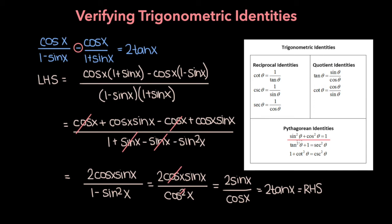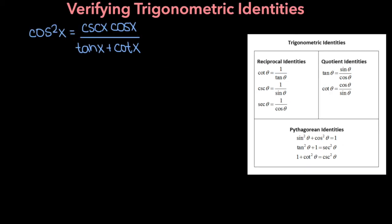Now let's move on to the next problem. We need to show that cosine squared x is equal to cosecant x times cosine x over tangent x plus cotangent x. When you're determining what side to start with, try to start with the more complicated side, because that will give you more to work with. For this problem, it's clear that the right-hand side is more complicated, so let's start with that.